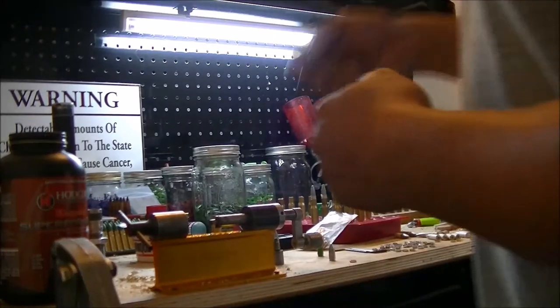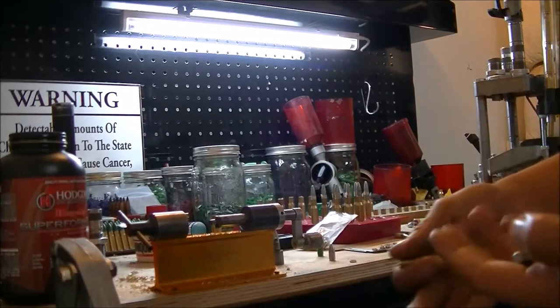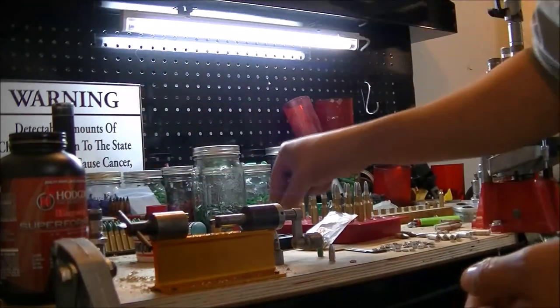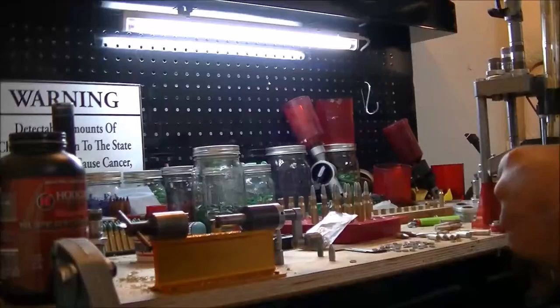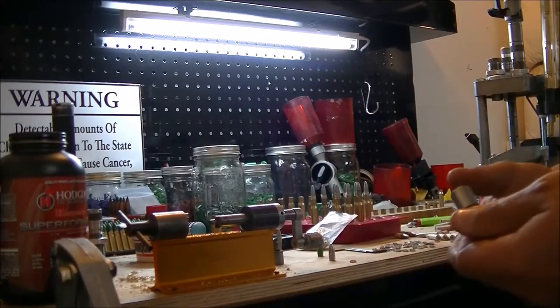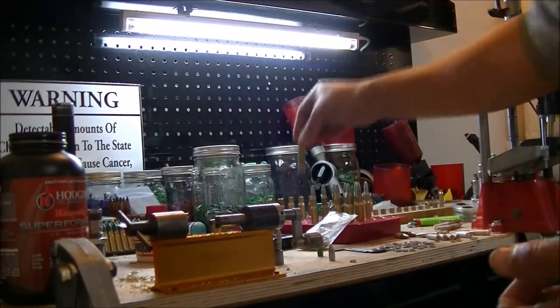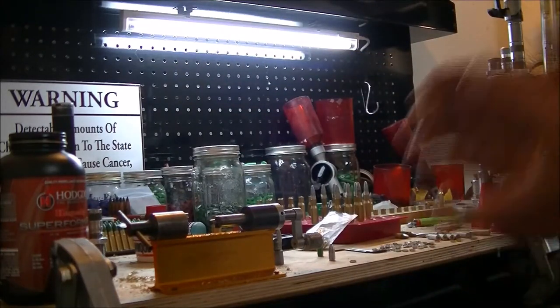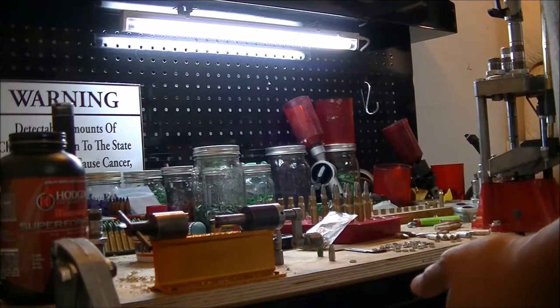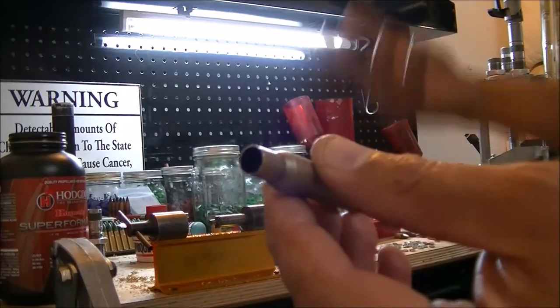So why do I like using this? There's one main purpose: I like to have my case neck about a thousandth of an inch when I'm seating these paper patch bullets. That way there's not so much tension that it rips the jacket off. Do you necessarily need the M-die or the NOE expander plug? Not really, there's a couple options you could use.